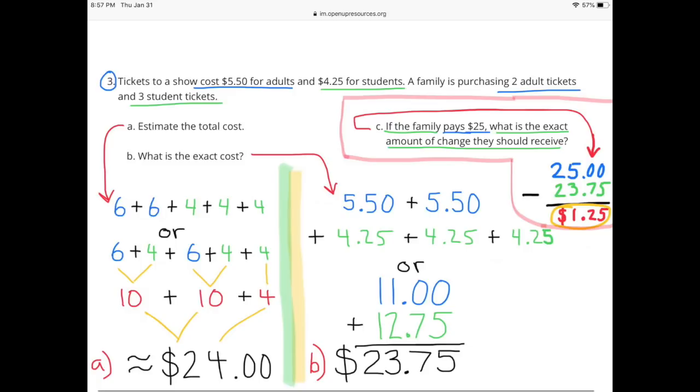Part C: If the family pays $25, what is the exact amount of change they should receive? $25 minus $23.75 equals $1.25. The family should receive in change $1.25.